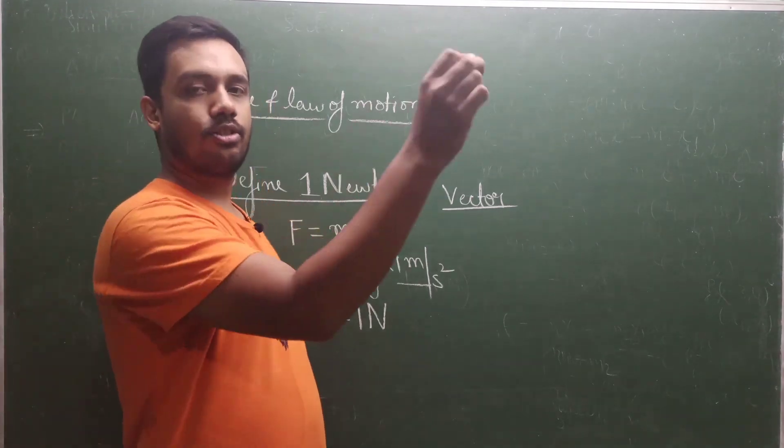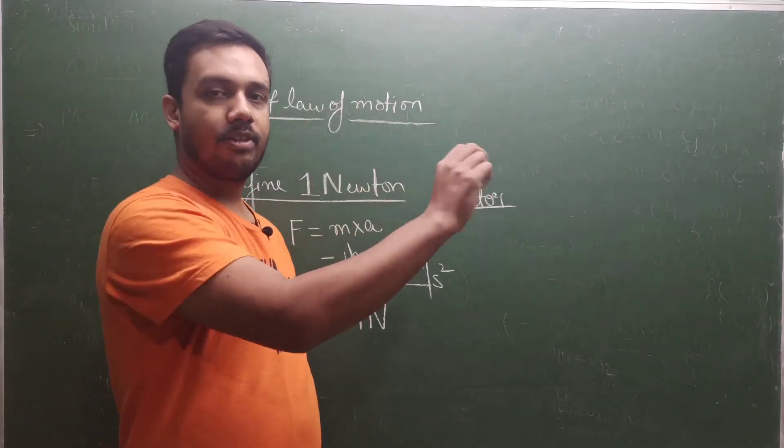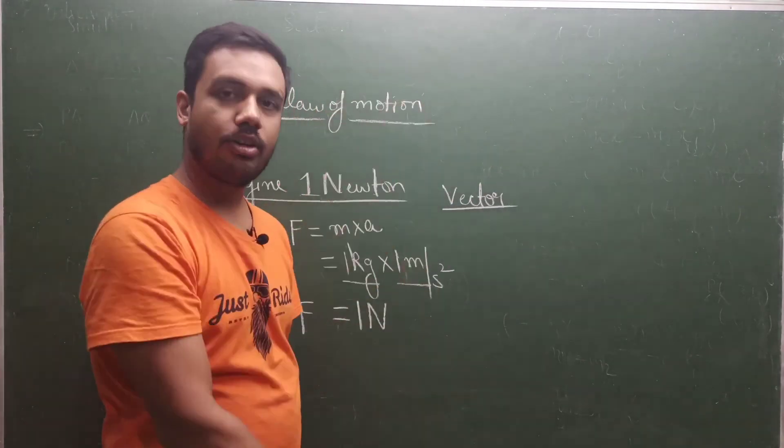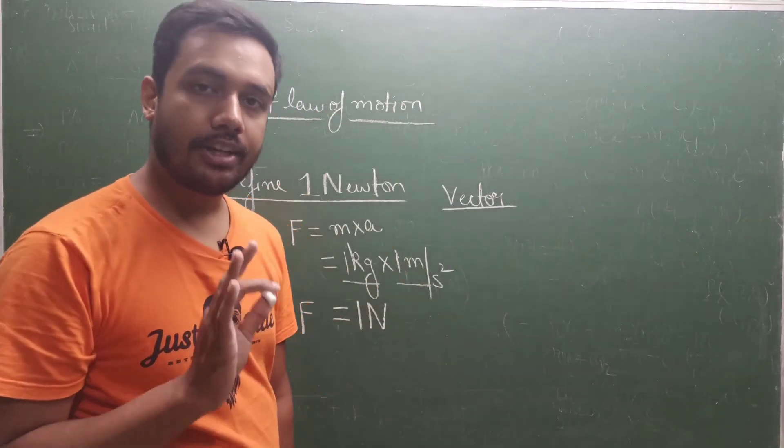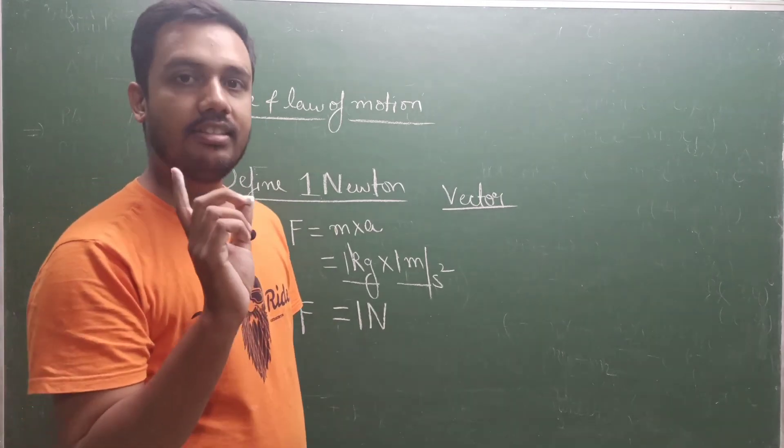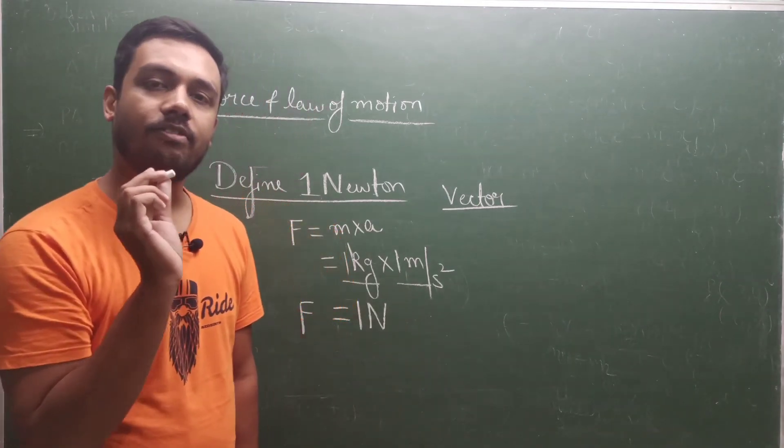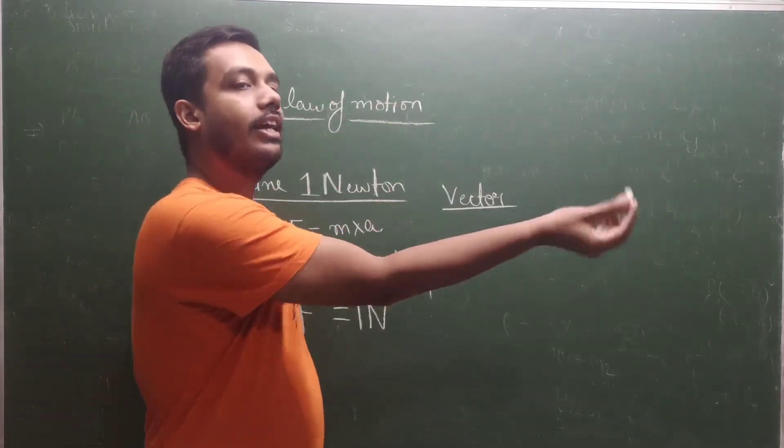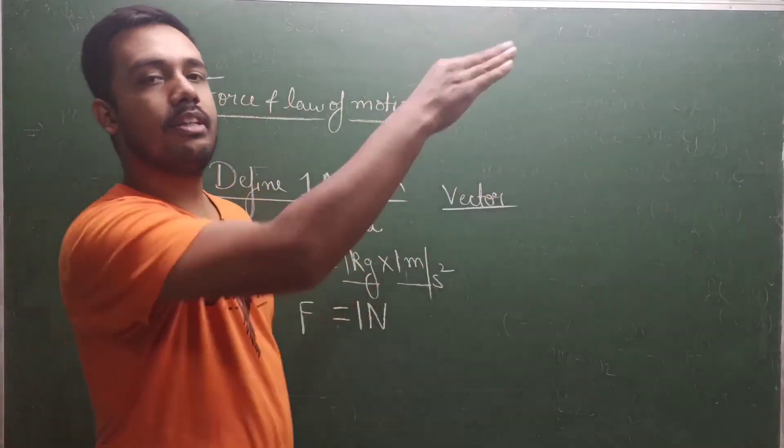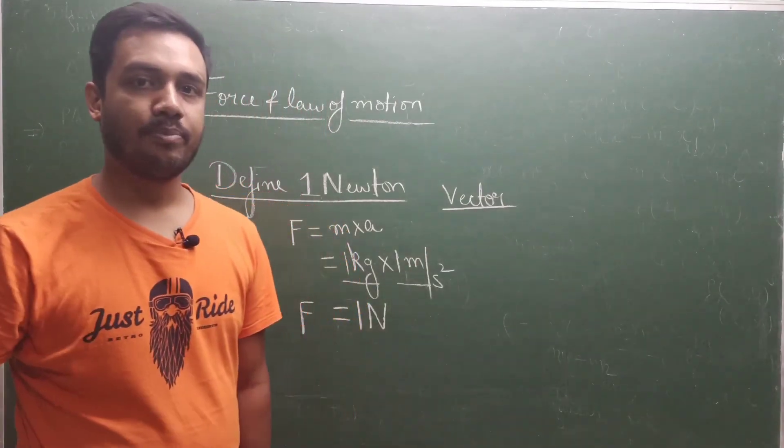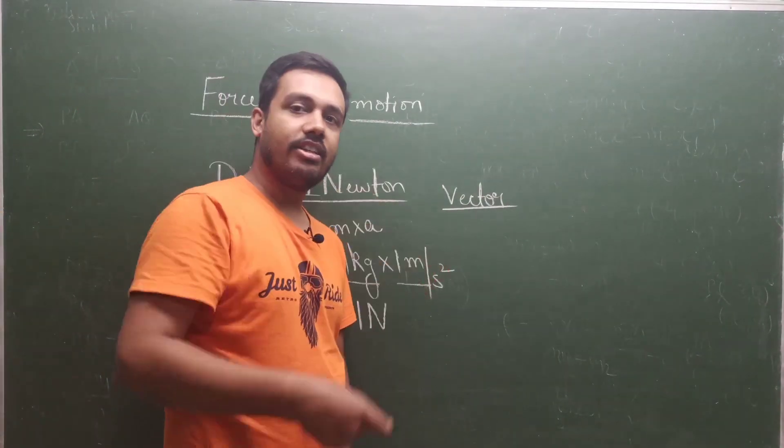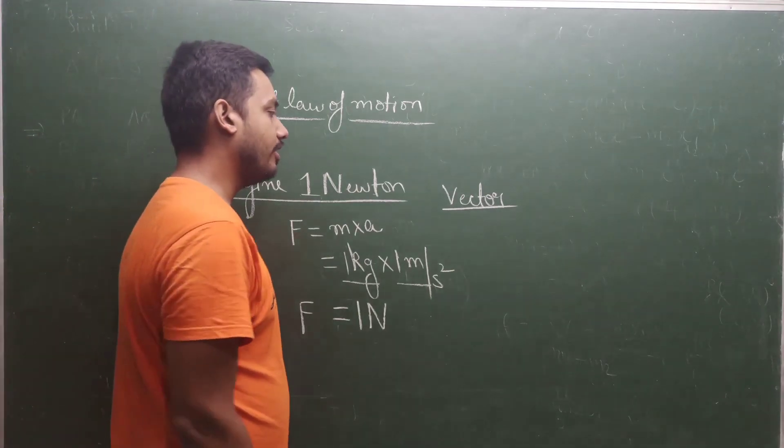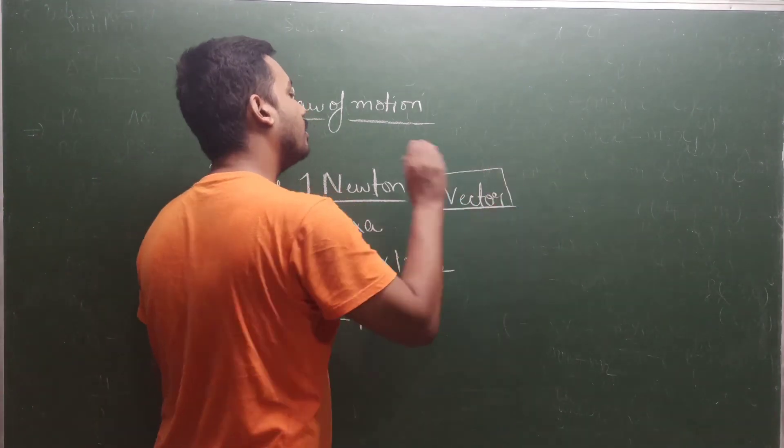If I am throwing this chalk, either I will throw it to the left, or to the right, or to the front, or to the back, or upward, or downward. A particular direction will be there. Direction means it is moving in one particular path. It may go in a straight line or zigzag. Force has got one particular direction, therefore it is a vector quantity.